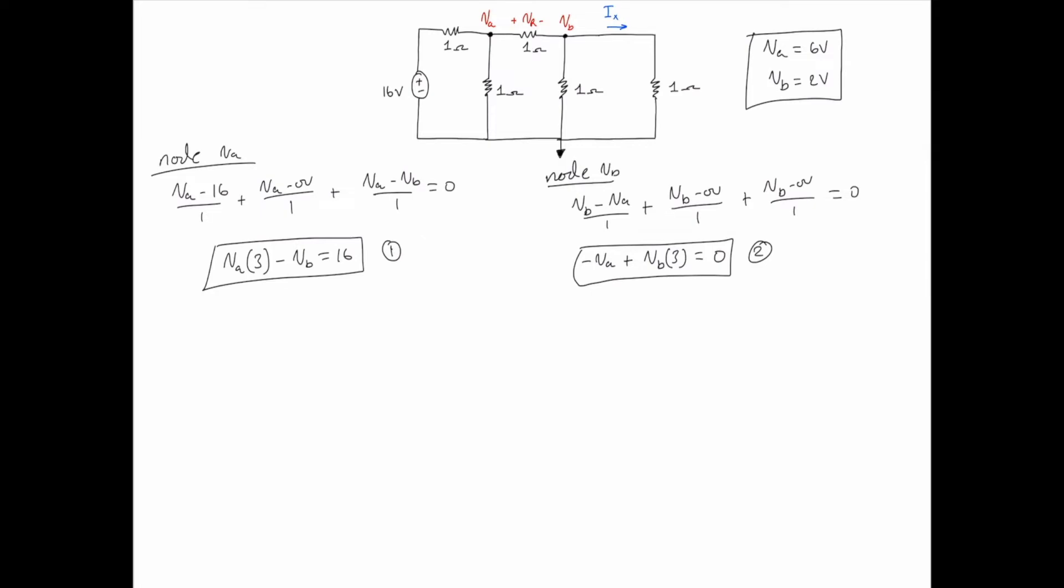Now with VA and VB we can solve for VR or IX. The voltage drop across the 1 ohm resistor is the difference between VA and VB. Thus VR = VA - VB = 6V - 2V = 4 volts.